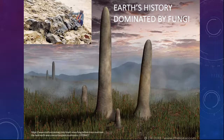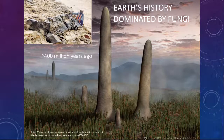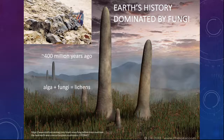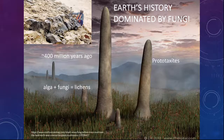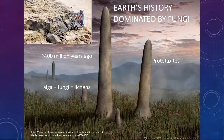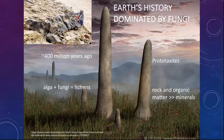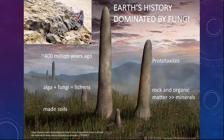Earth's history has once upon a time been dominated by fungi. About 400 million years ago algae and fungi came out together in a symbiotic relationship as lichens and started producing oxygen. Giant fungi grew called prototaxites, potentially 10 meters tall. These decomposed rock and organic matter into minerals, forming the first soils.